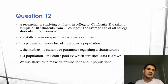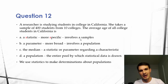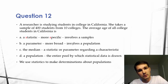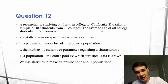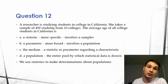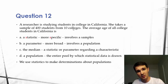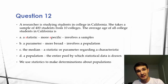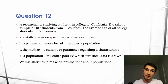Let's define these terms. A statistic is more specific — it involves samples. So the S's all stay together. In this question, we're looking at the average age. A statistic would be the average age of the 400 students from the 10 colleges, because the 400 students from the 10 colleges is a sample.